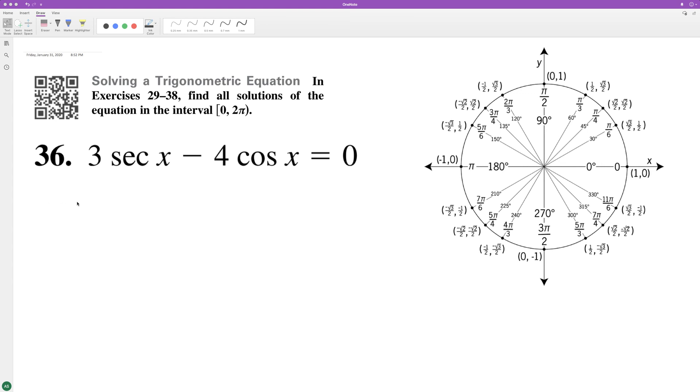Solving for x from 0 to 2π. Starting off, we can rewrite this by moving the cosine over to the other side, so 3 secant x is equal to 4 cosine x.